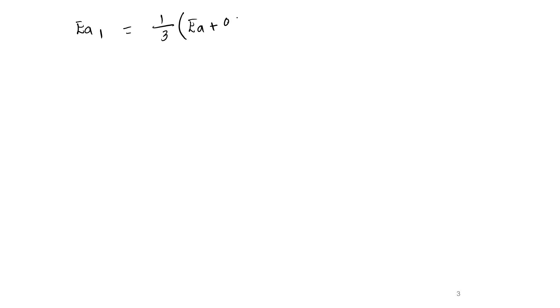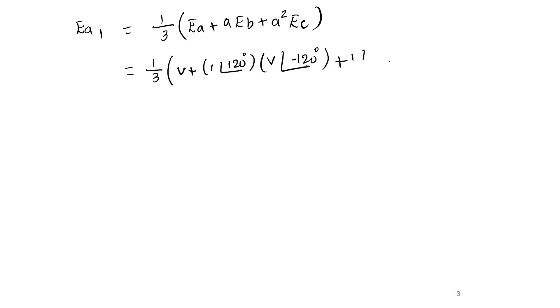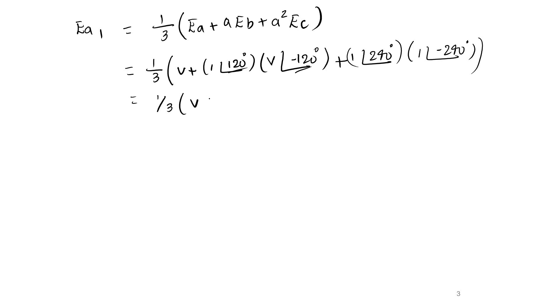Let us find the sequence components EA1, EA2, and EA0. EA1 equals one-third times of EA plus A·EB plus A²·EC. Substituting: EA is V, A is 1 at angle 120° and EB is V at angle minus 120°, A² is 1 at angle 240° and EC is 1 at angle minus 240°. This simplifies to one-third times of V at angle 0° plus V at angle 0° plus V at angle 0°, giving EA1 equal to V volts.